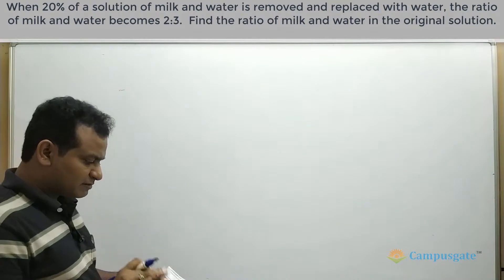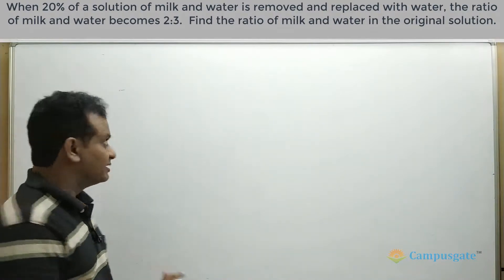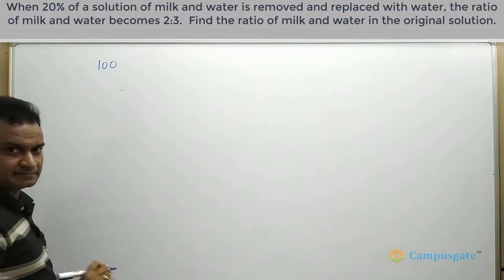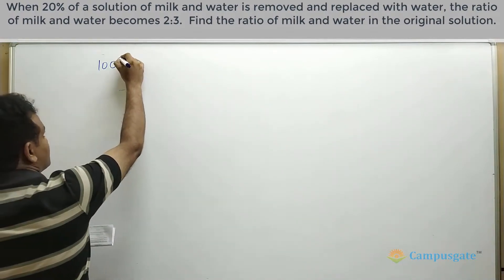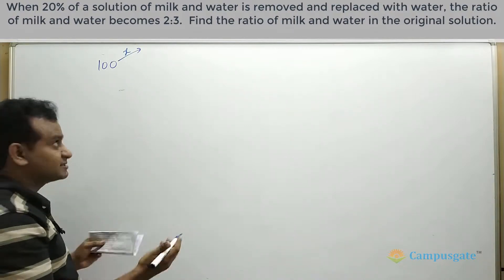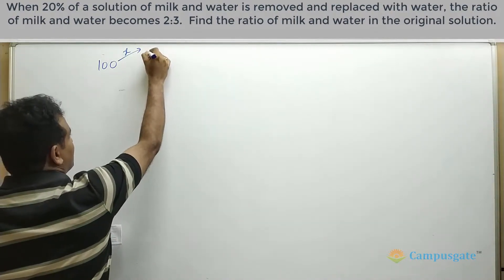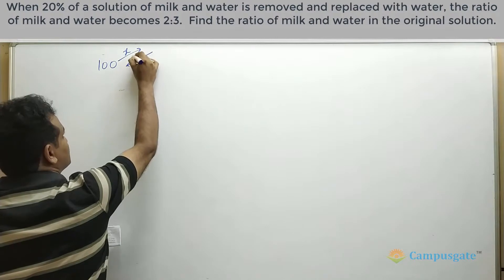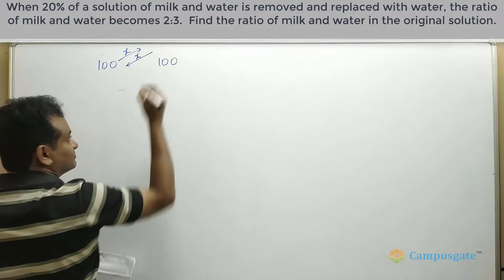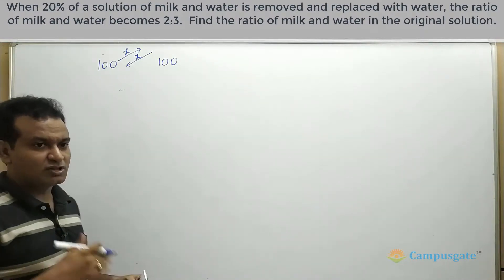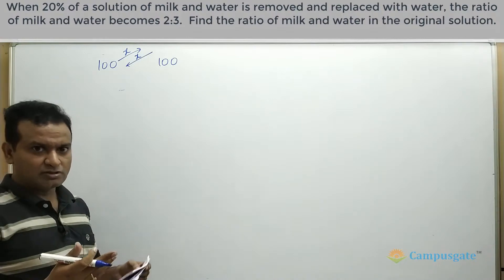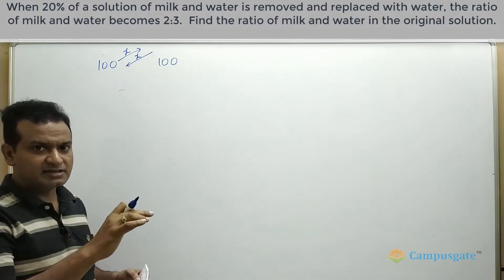So it is given that 20% of the solution of milk and water is removed. Let us take the initial volume is 100 liters. Now x liters was removed from this mixture and again we have added x liters to it. The volume becomes 100 again. So this is very easy. The volume we can take it as 100 and 20% means the quantity which is added is 20 liters.